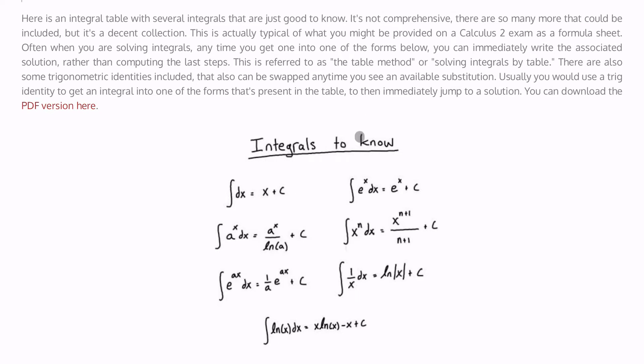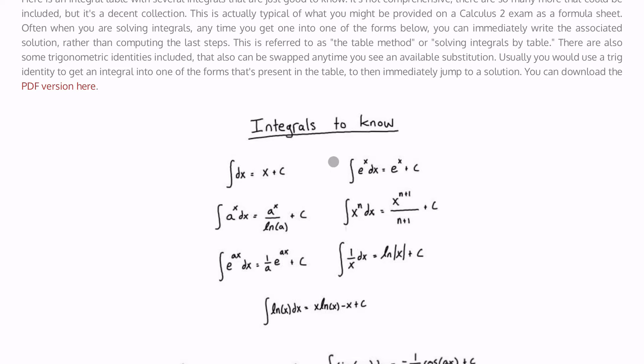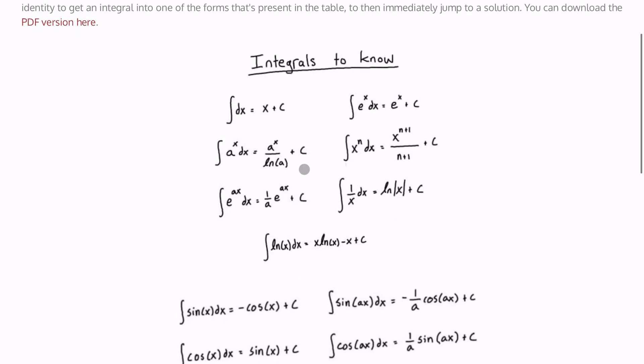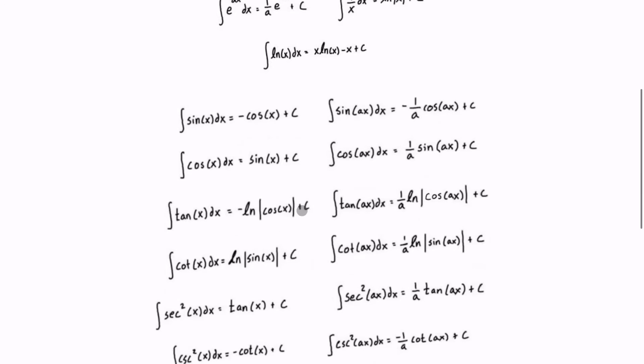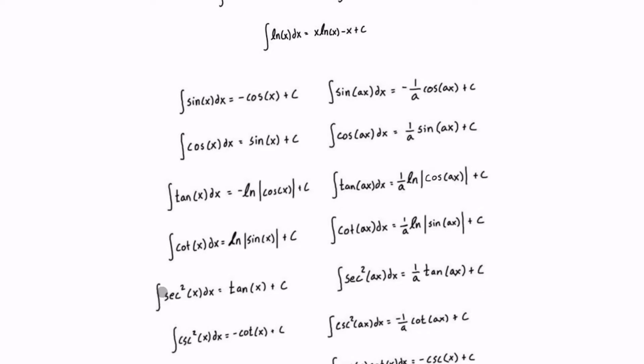We want to look for one that had the form of the integral of secant squared x dx. So if we scroll down here, eventually we're going to get down to this section, and we've got it right here. The integral of secant squared x dx is just equal to tan of x plus c.